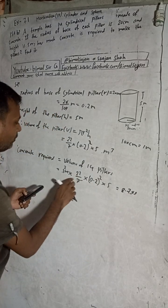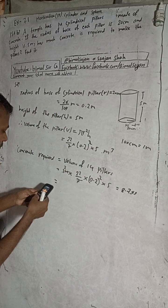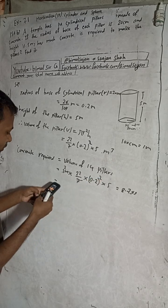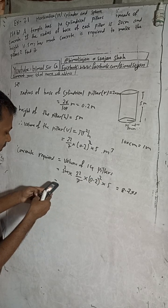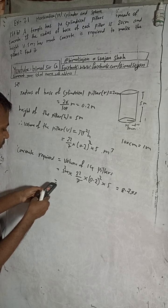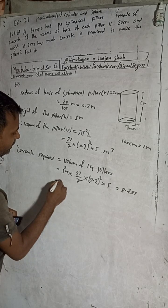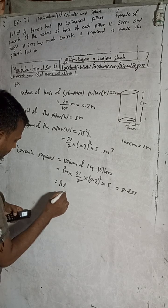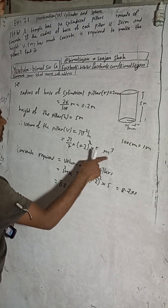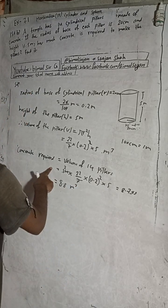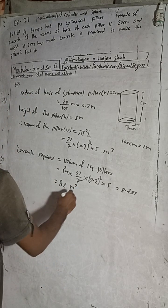Let me recalculate more carefully: 22 × 2 = 44, and 0.2 × 0.2 × 5 gives us the result. So 14 × 22/7 × 0.04 × 5 = 8.8 metres cubed. The concrete required is 8.8 metres cubed.